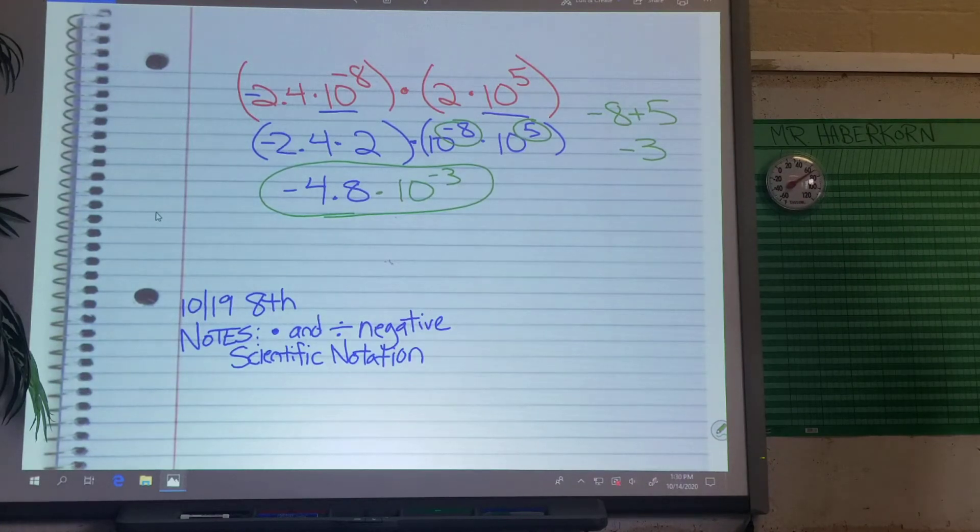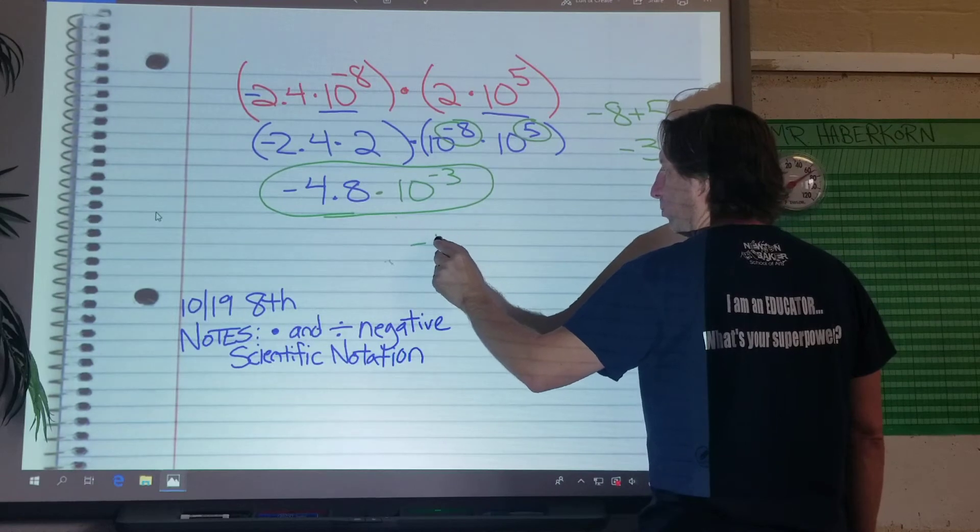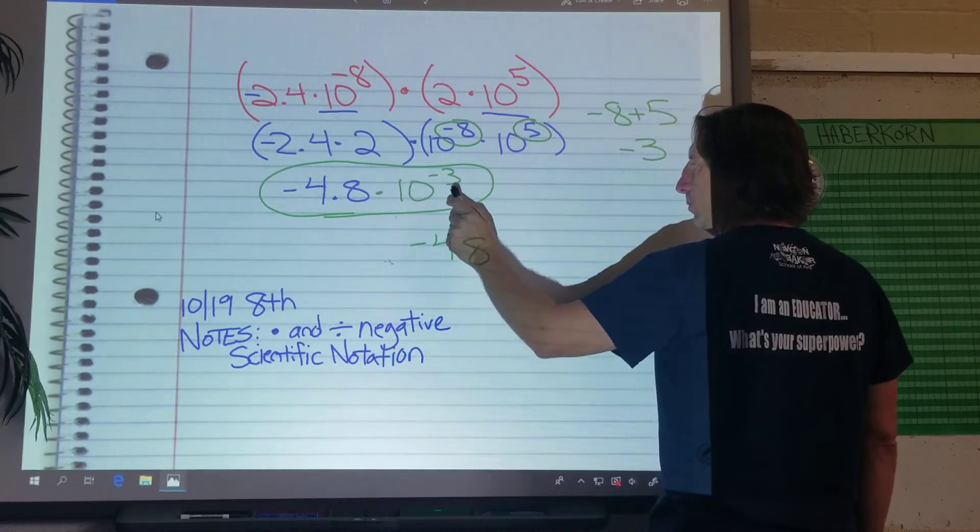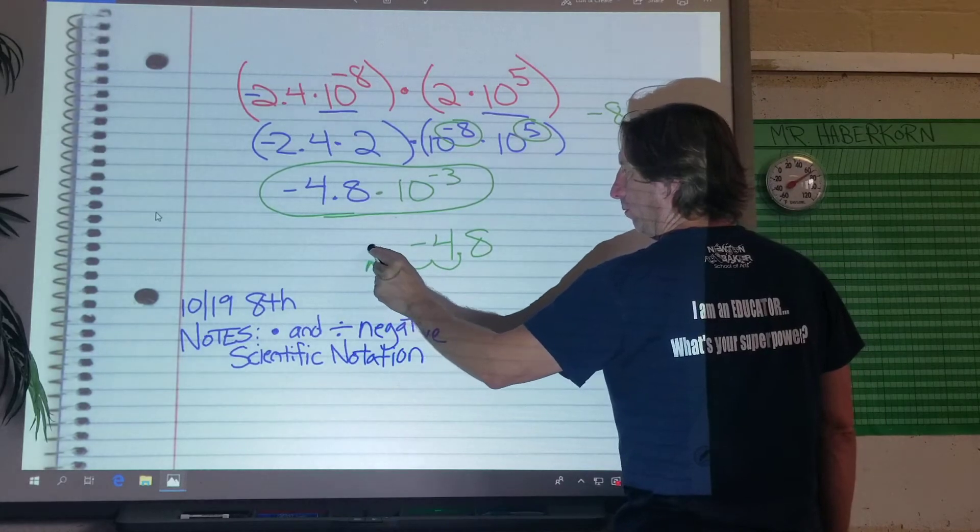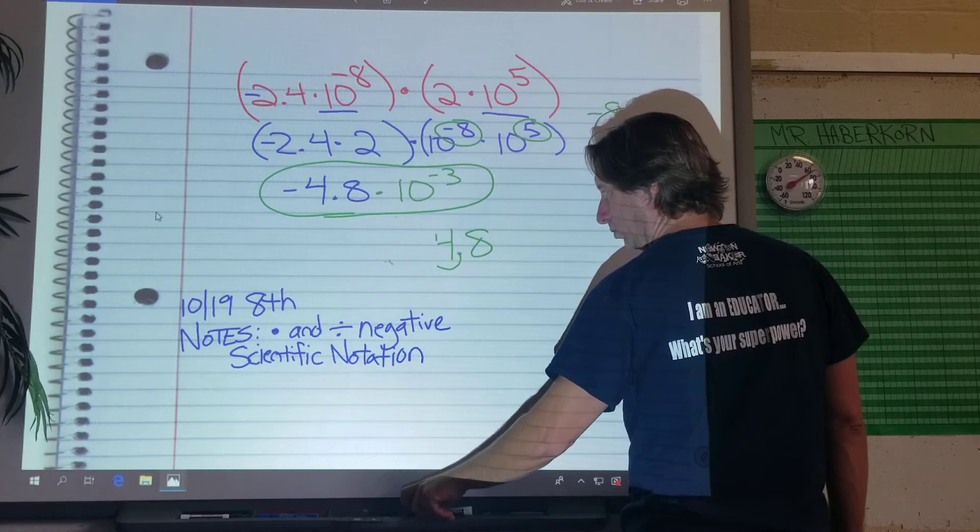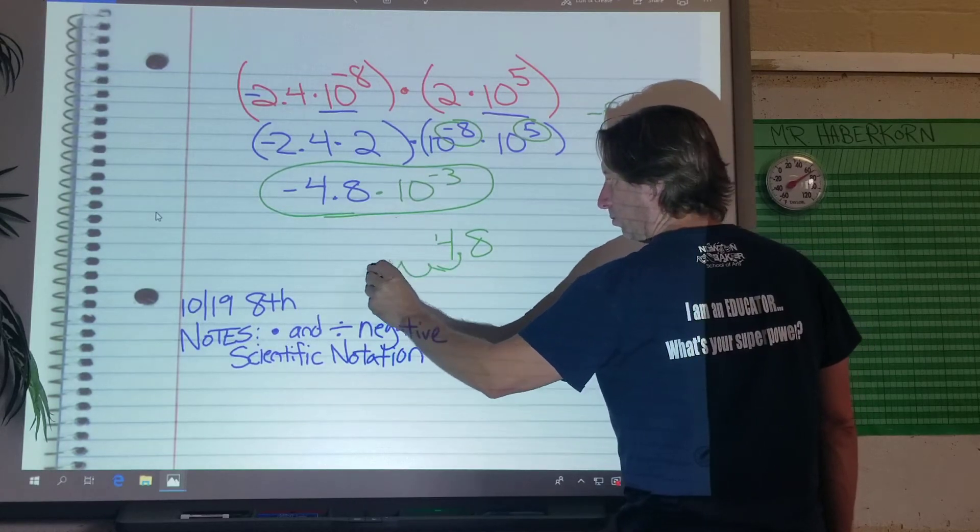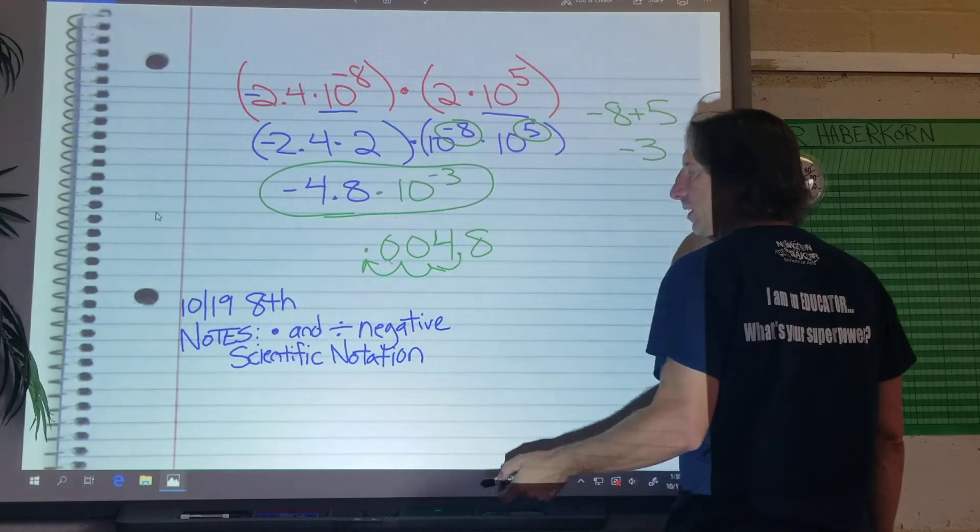And what if they asked for this in standard form? Let's write down negative 4.8. Move my point to the left three spaces. 0.0, 0 times 1, 2, 3. 0, 0, 4, 8, right? And then it's negative.